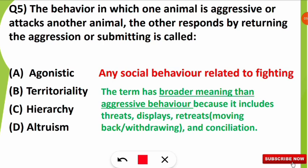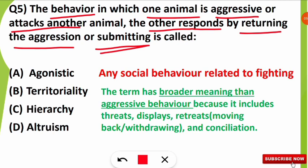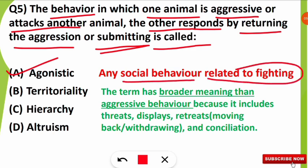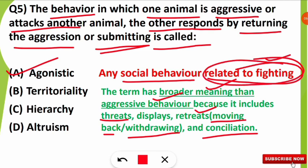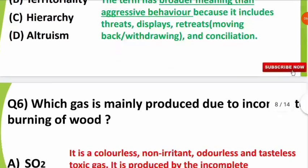The fifth question was from animal behavior: the behavior in which one animal is aggressive or attacks another animal, and the other responds by returning aggression or submitting, is called what? This is known as agonistic behavior — any social behavior related to fighting. It has a broader meaning than aggressive behavior because it also includes retreat, withdrawing from the fight, displaying threats, and conciliation.